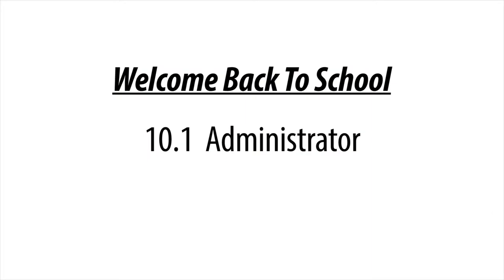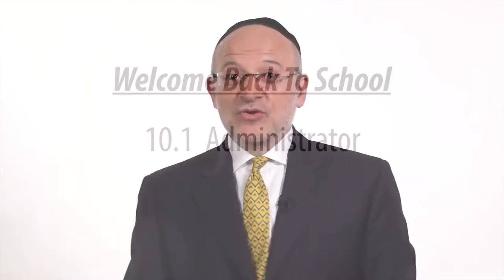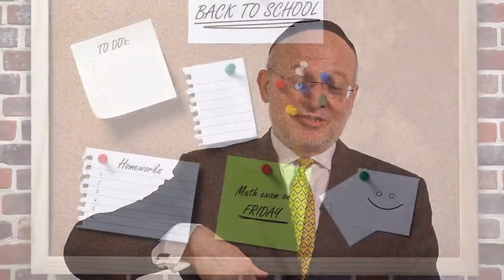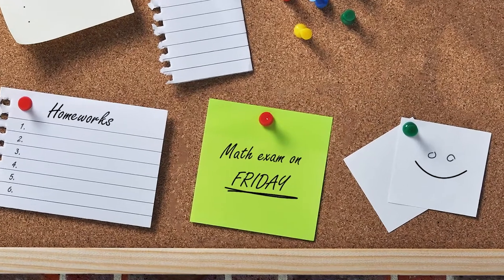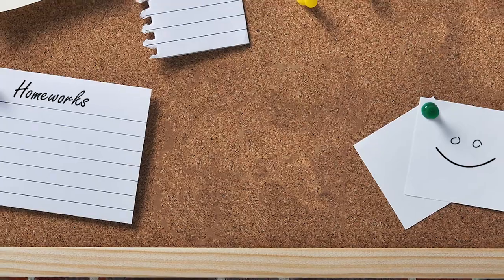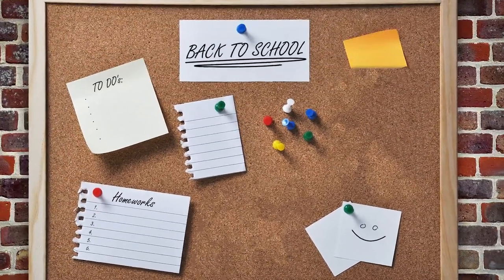We'll go from 10.1 through 10.11. For example, 10.1: we need an administrator in the classroom — the right-hand person for the teacher. The administrator will be the liaison between the classroom and the office. If there's a message from the office, he's responsible for getting it and bringing it to the classroom. He'll also be responsible for the bulletin board — putting up notices, taking them down when no longer relevant, keeping them orderly.